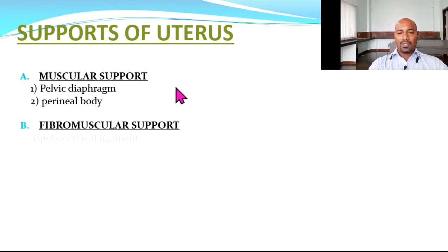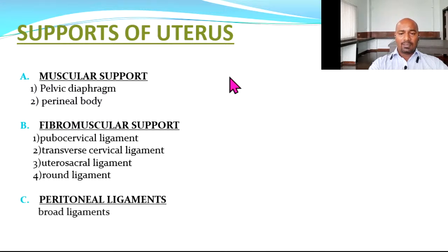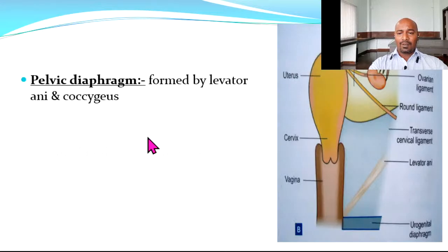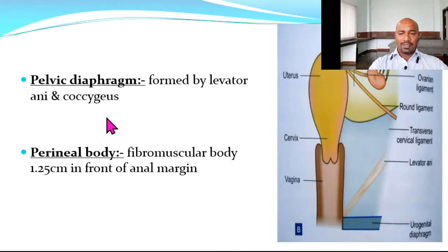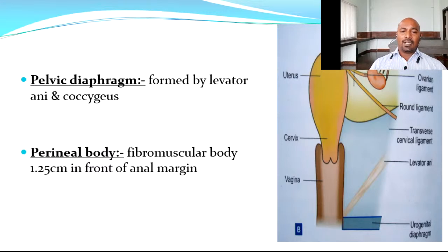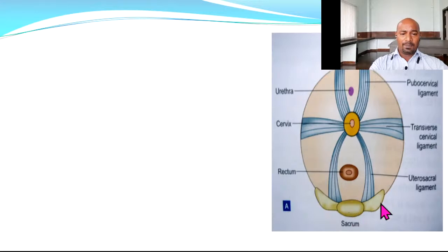Coming to the supports of the uterus — there are muscular supports, fibromuscular supports, and peritoneal ligaments. Muscular supports include the pelvic diaphragm and perineal body. Fibromuscular supports include the pubocervical ligament, transverse cervical ligament, uterosacral ligament, and round ligaments. Peritoneal ligaments include the broad ligament. The pelvic diaphragm is formed by the levator ani and coccygeus muscles. The perineal body is a fibromuscular body about 1.25 centimetres in front of the anal margin.